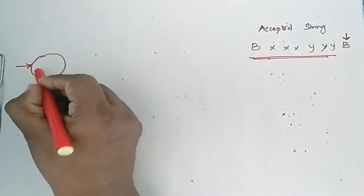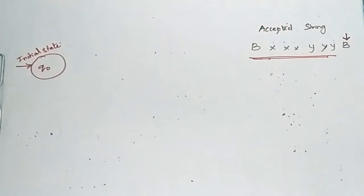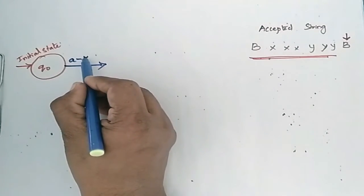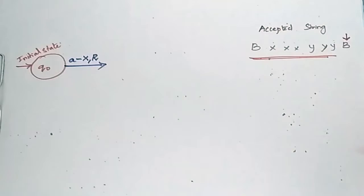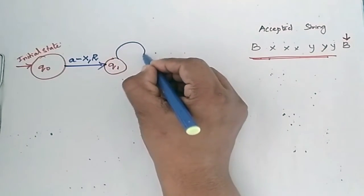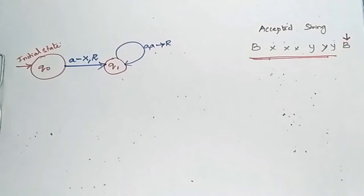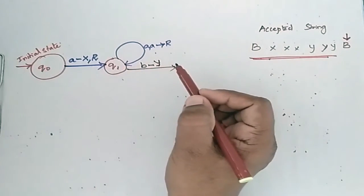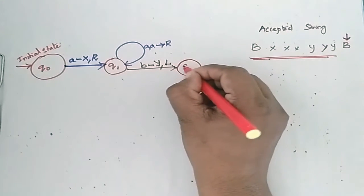q0 is the initial state. In q0, the machine encounters 'a', changes it to 'x', and the tape header moves right — transitioning to state q1. In q1, it can encounter any number of a's and moves right. When it encounters 'b', that 'b' is replaced by 'y', and then it moves left, transitioning to state q2.